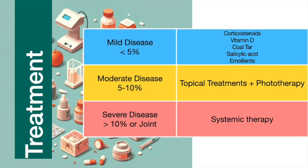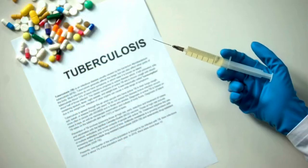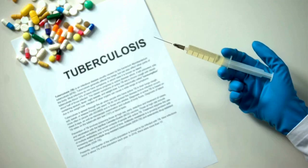Biologic therapies targeting tumor necrosis factor alpha, IL-17, or IL-23 — such as etanercept — are now commonly used for moderate to severe psoriasis and psoriatic arthritis. Before initiating biologics, patients should be screened for tuberculosis and hepatitis B and C.